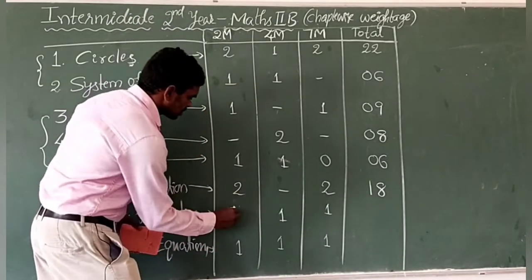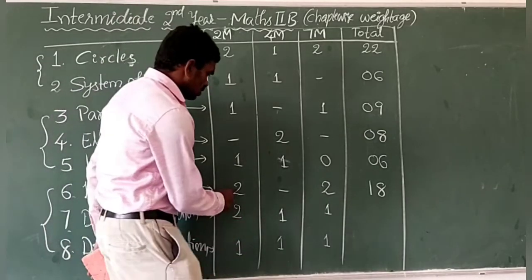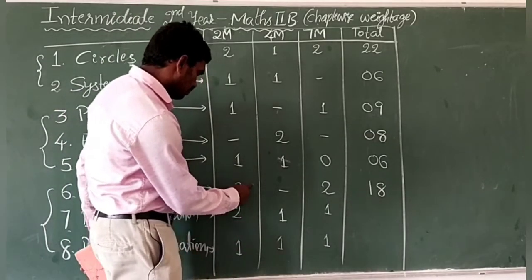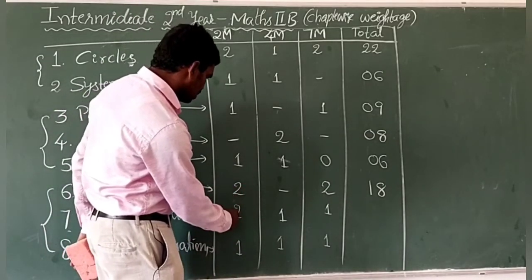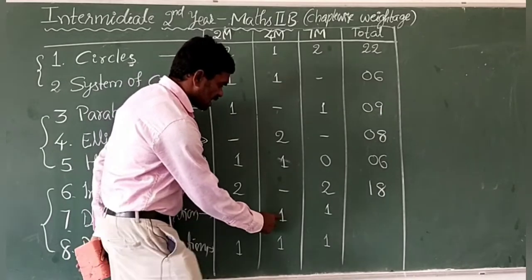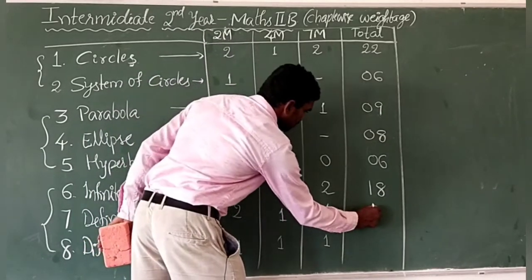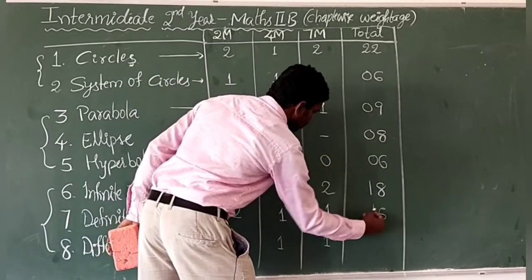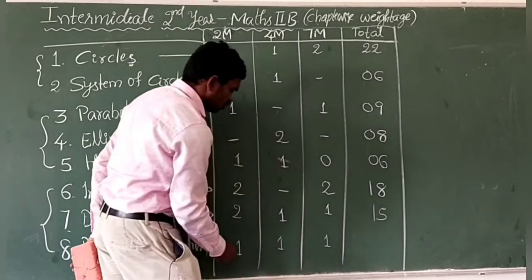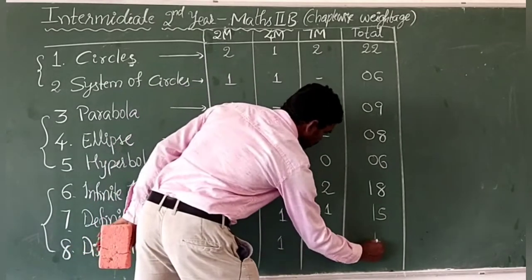For Definite Integration: 2 plus 4 plus 7 = 13 marks. For Differential Equations the total comes to approximately 13 to 15 marks depending on choices.